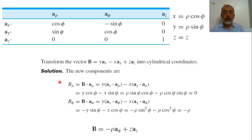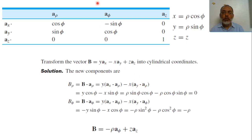The rho component is B·a_rho = y·cos(phi) + (−x)·(−sin(phi)) — wait, correcting: B_rho = y·cos(phi) − x·sin(phi). Substituting y = rho·sin(phi) and x = rho·cos(phi): rho·sin(phi)·cos(phi) − rho·cos(phi)·sin(phi) = 0. So the rho component of B is zero.